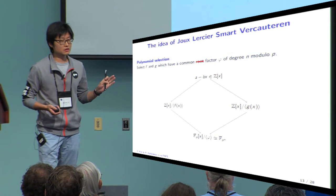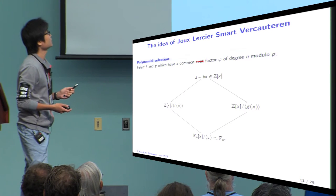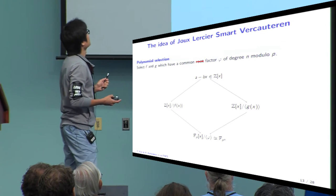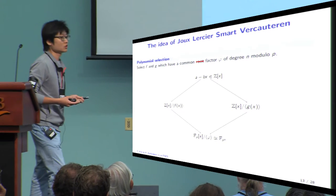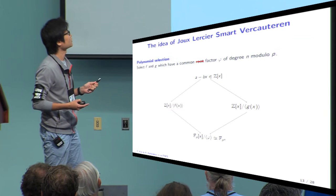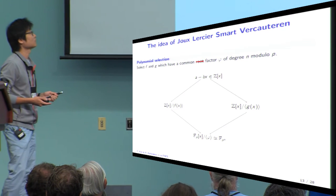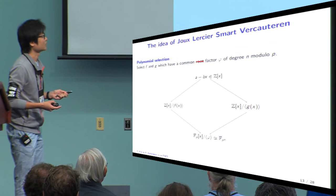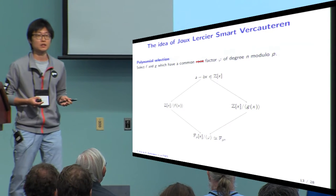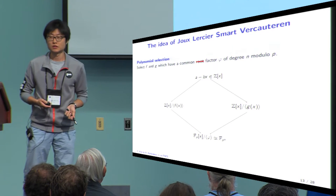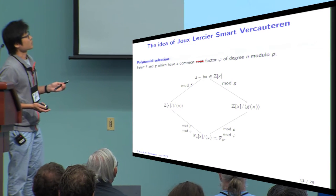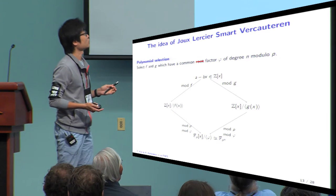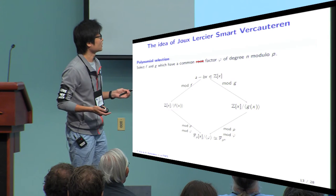To extend NFS to solve DLP of a non-prime field, JLSV simply modified the polynomial selection part. In JLSV, they choose F and G such that they have a common root — a common factor phi of degree N modulo P. We then have a similar commutative diagram, but this time we target the field F_{P^N} defined by phi, the common factor of F and G. We sieve on polynomial A minus B*X by taking modulo F and modulo P, and modulo G and modulo P, getting a relation in F_{P^N}.